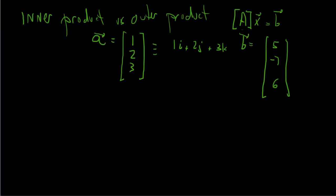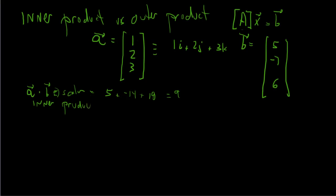Now we want to talk about the dot product. The dot product of A and B — that's called the inner product — and it becomes a scalar. It's 1 times 5, plus 2 times minus 7, plus 3 times 6, which equals 5 plus minus 14 plus 18. We're dealing in three dimensions here; it's the X components multiplied together, plus Y, plus Z. So this equals 9. That's the inner product. In reality it is A transpose times B.